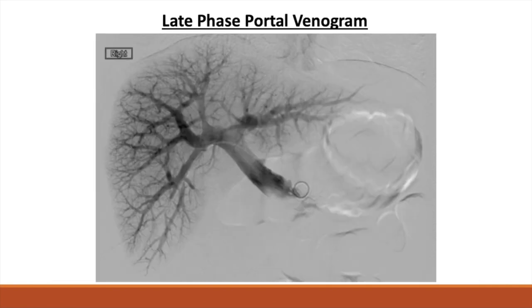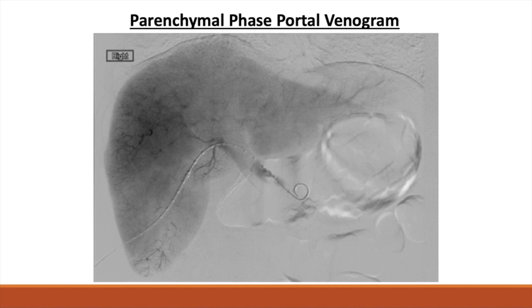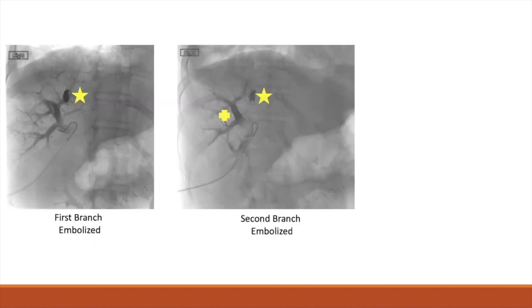This is a late phase portal venogram and this is a parenchymal phase portal venogram. Once the anatomy is confirmed, the pigtail catheter is replaced with a reverse curve catheter and all target branches of the portal vein, with the exception of the one initially accessed, are sequentially embolized. If the interventionist would like, portal pressures may also be obtained so that if evidence of portal hypertension is present, the procedure might have to be aborted.